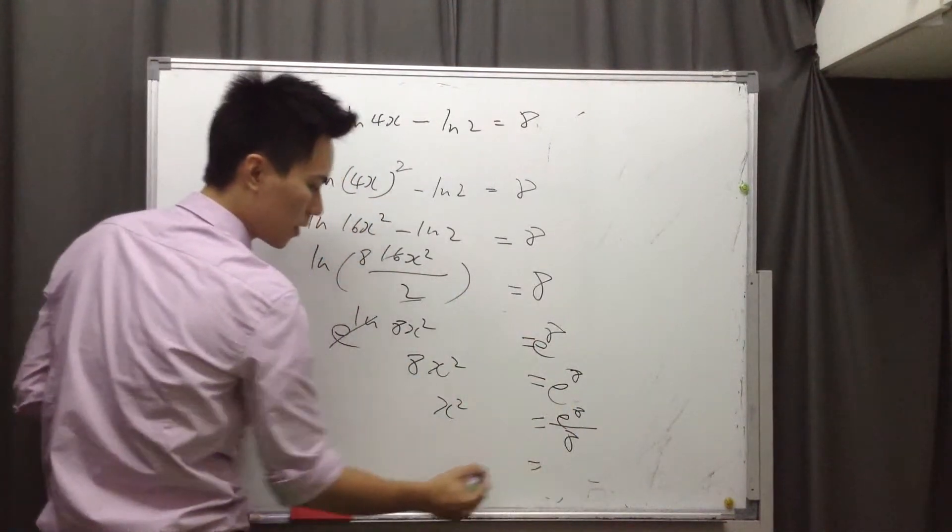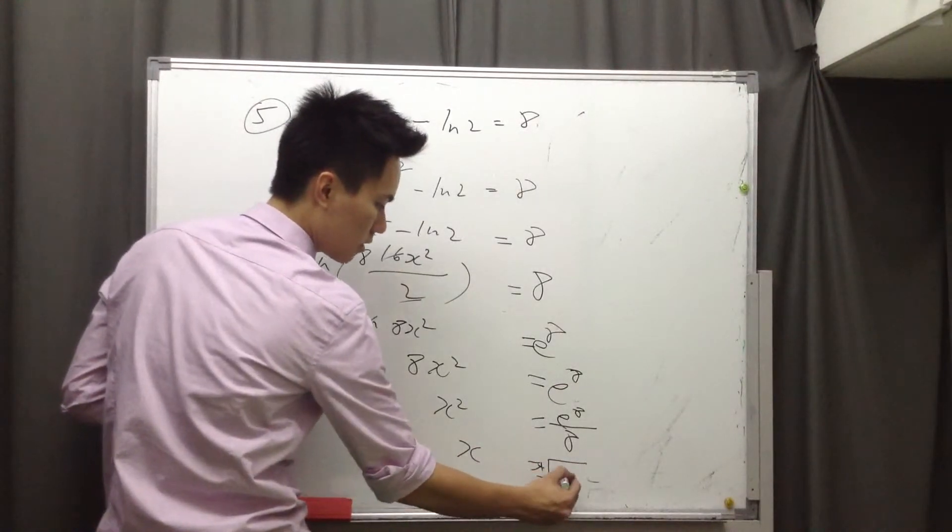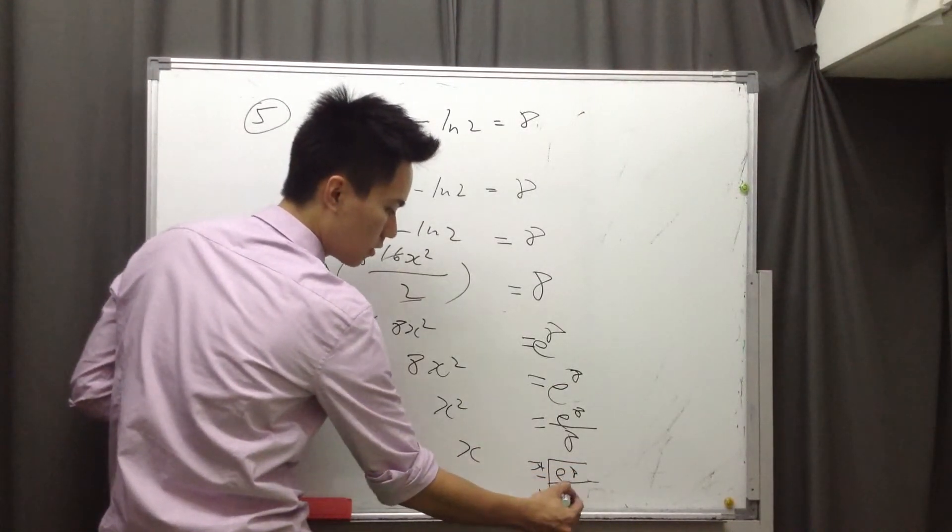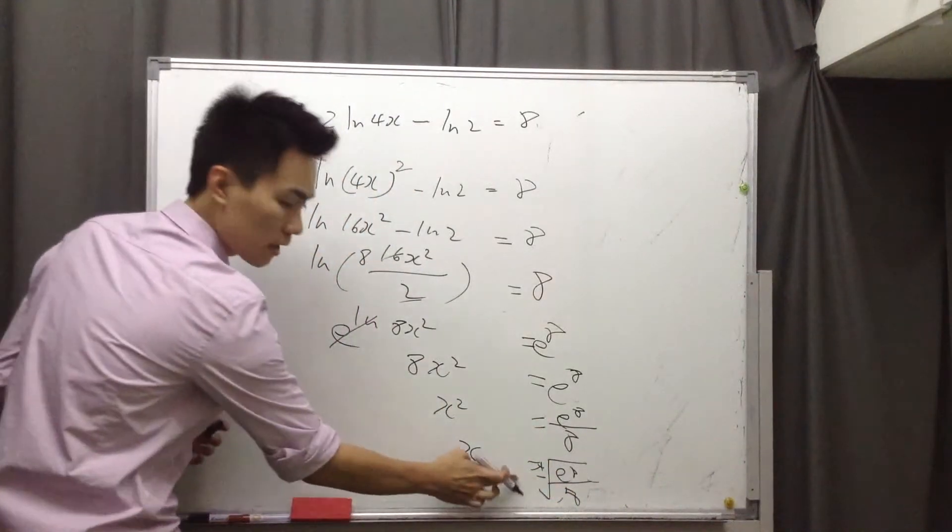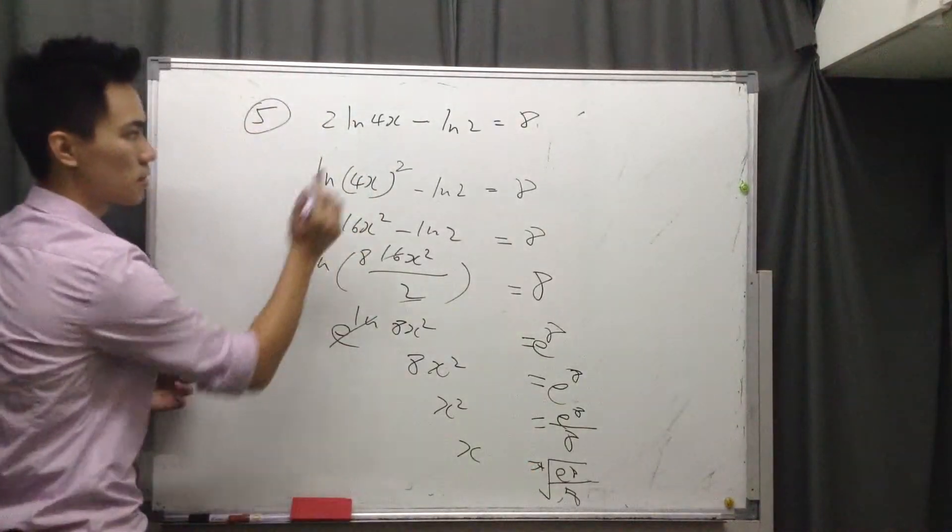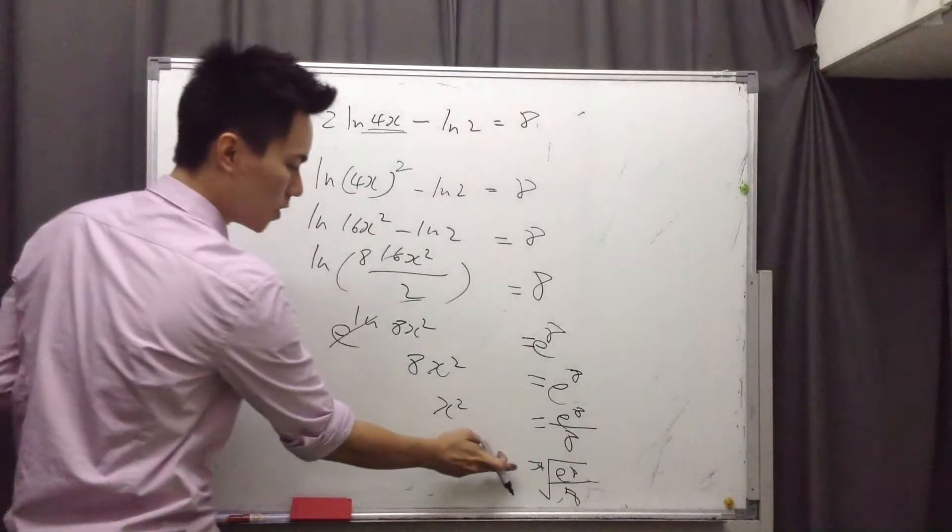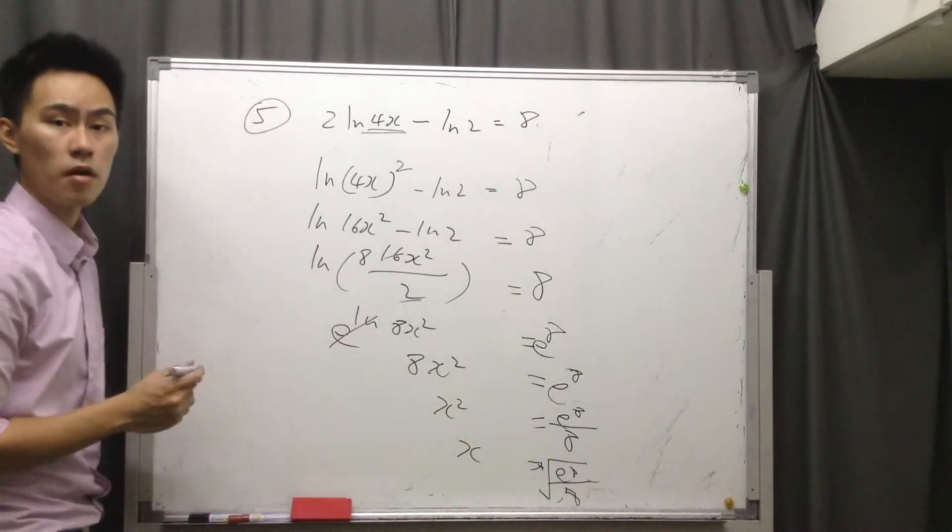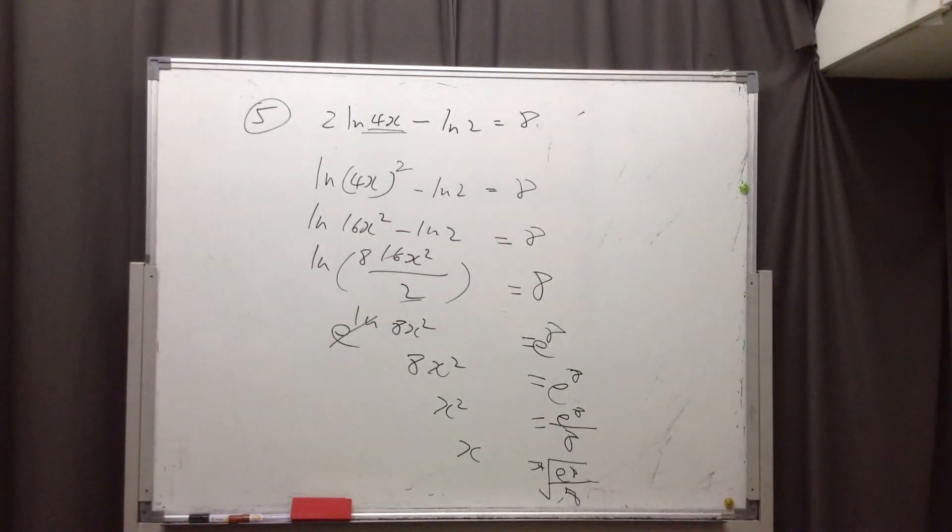So finally, x equals to square root plus or minus e to the 8 over 8. But you need to reject the negative value right here. Why is it? Because the result here can never be negative. So the answer will be just root e to the power 8 over 8.